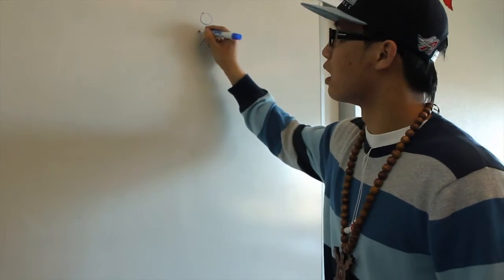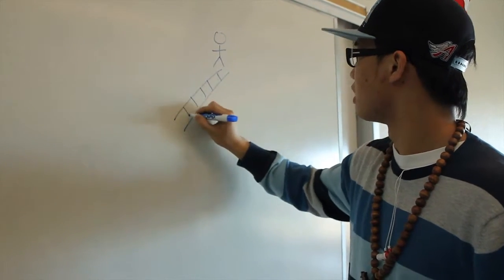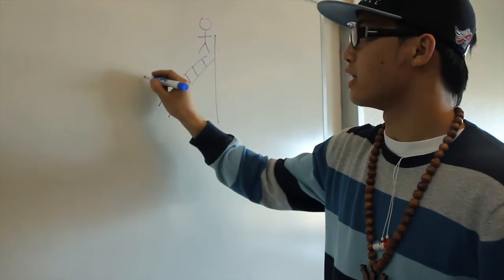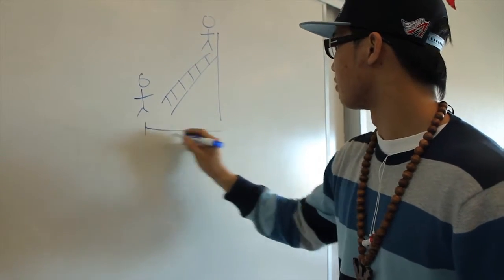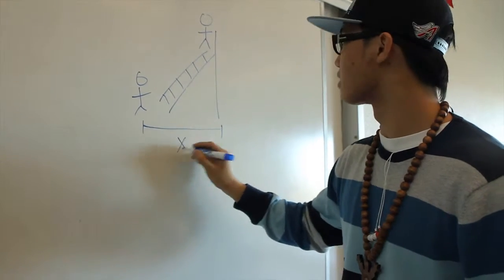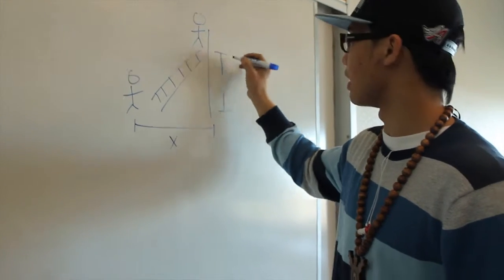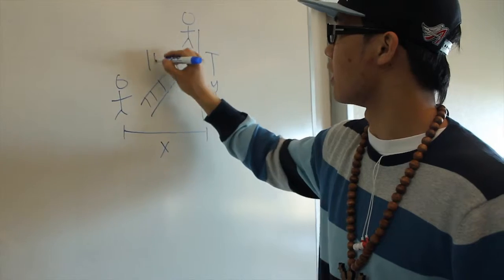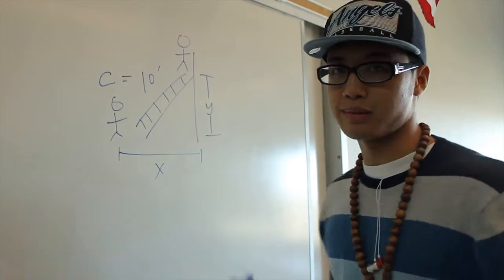So here's the scenario. Phillip is on top of a 10-foot ladder that's leaned up against the building. He has a partner that is 6 feet away, and we'll call that X. The wall distance from the top of the ladder we'll call Y, and we'll call the 10-foot ladder C, and I'll explain that later.